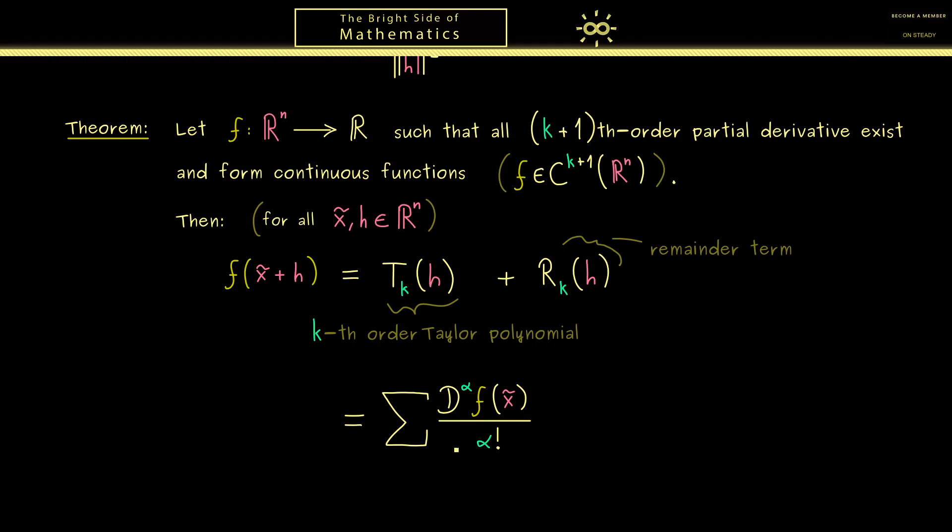Here please recall that α factorial is defined with the components of α. Ok, then in order to get a polynomial, we multiply this coefficient with h to the power α. There, you also already know, a vector to the power of a multi-index is just a product of the components of h. So we see, this is a well defined polynomial where in the coefficients we find the partial derivatives of f.